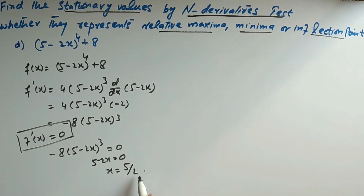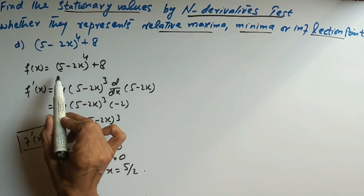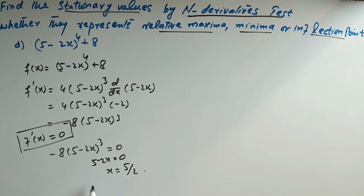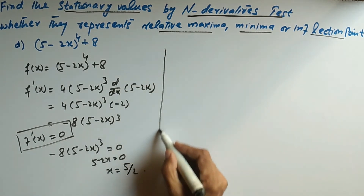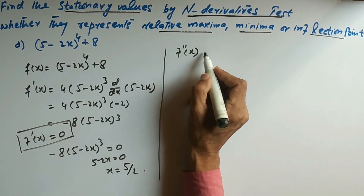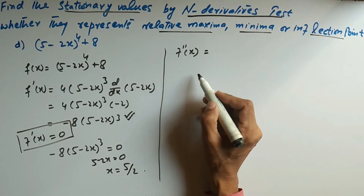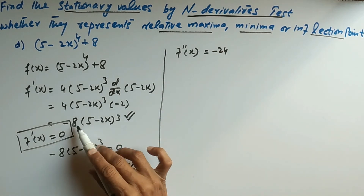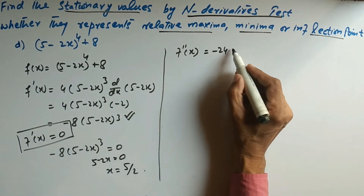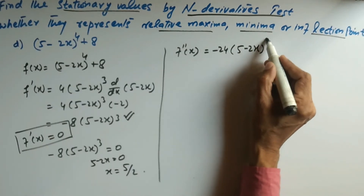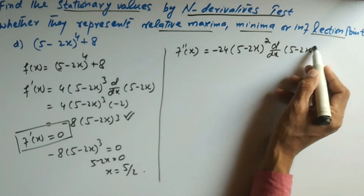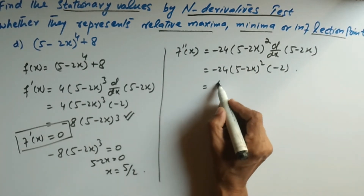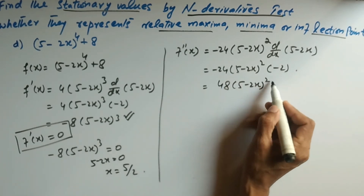When x = 5/2 is substituted into the first derivative, it equals zero — confirming the stationary value. Now we take the second derivative: f''(x) = -24(5 - 2x)² · (-2) = 48(5 - 2x)². When we put x = 5/2, the second derivative is also zero.